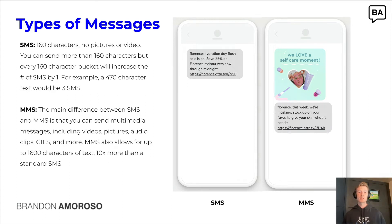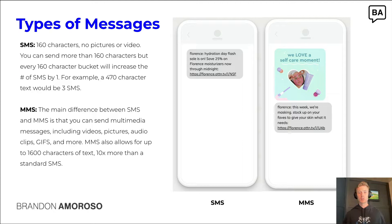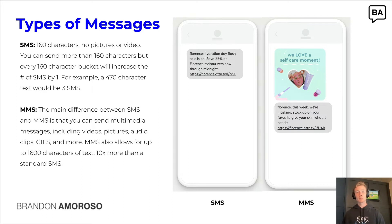There are two types of messages you'll be able to send in your marketing program. The first is SMS — these are 160-character, text-only messages with no pictures or video. You can send more than 160 characters, but for every 160-character bucket you increase, that will increase the number of SMS messages by one as well as the cost to send from your text messaging marketing platform.